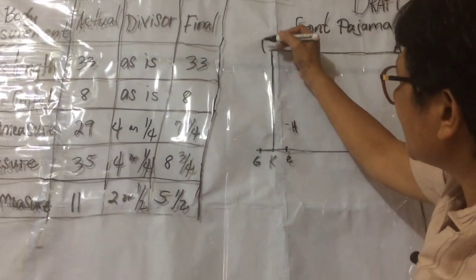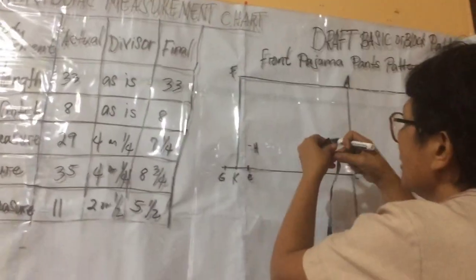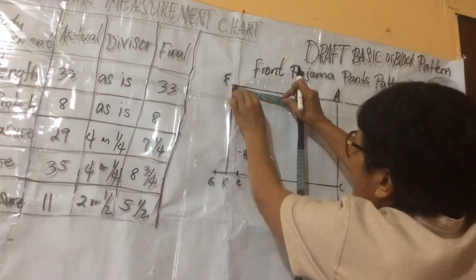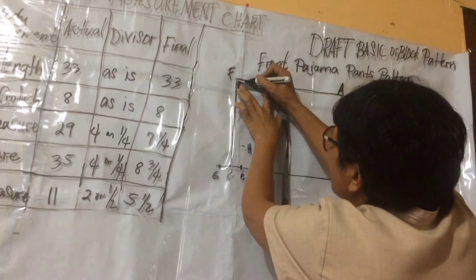Mark F. From point F to the right, measure 3 fourths inch.